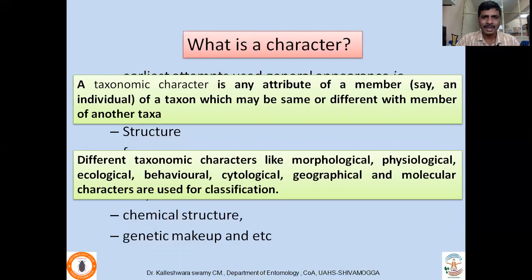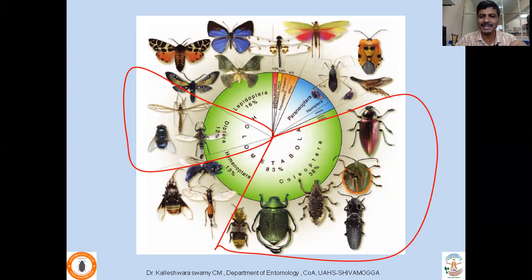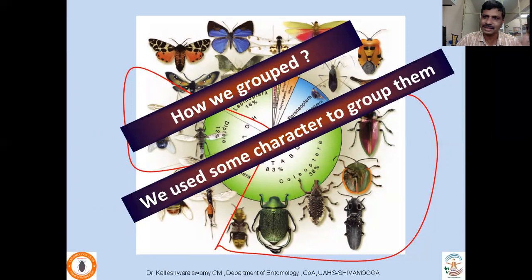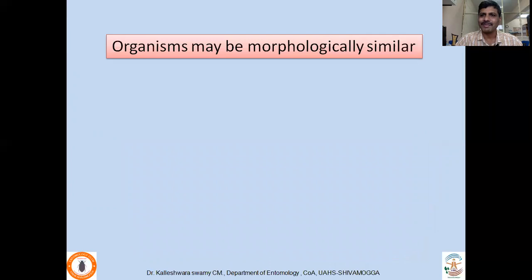Having understood the meaning of character, we can start classifying the organisms. For example, if any insect has halteres — the hindwing reduced to halteres — all of them will be placed under the order Diptera. Similarly, if any insect has elytra, wherein the forewings are modified as elytra, you will group them as Coleoptera. So we used some characters to group them — halteres or elytra in this case. Organisms may be morphologically similar, and based on that similarity we place them.